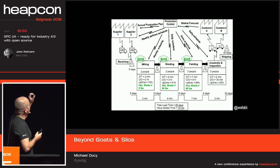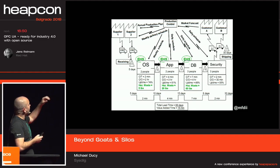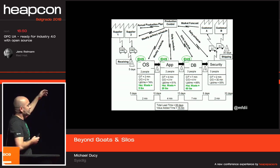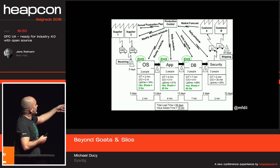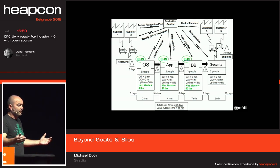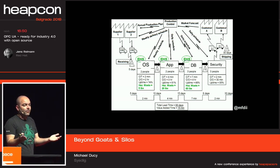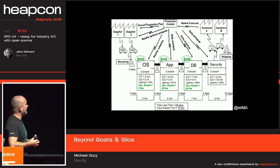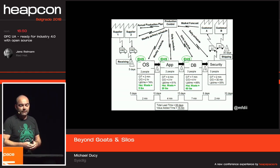If we change the labels on the value stream map to more IT-centric labels, you can see that it takes about two minutes of work for the operating system team to create the OS on the machine, then 10 days before the application team gets around to deploying the application. It takes four minutes to deploy the application, then 15 days before you can move it to the database team, eight days before it goes to the security team, and so forth. All in all, we end up spending 30 days just to get a machine out. Hopefully you're using some form of automation by now, but five years ago this was a really important concept because automation wasn't as prevalent.